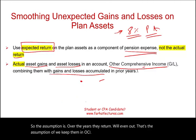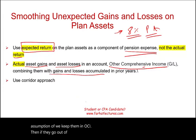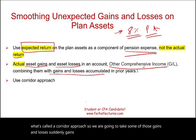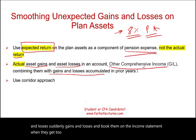But if they go out of control — meaning too large — we are going to use what's called the corridor approach. We will take some of those sudden gains and losses and book them on the income statement when they get too large, using the corridor approach.